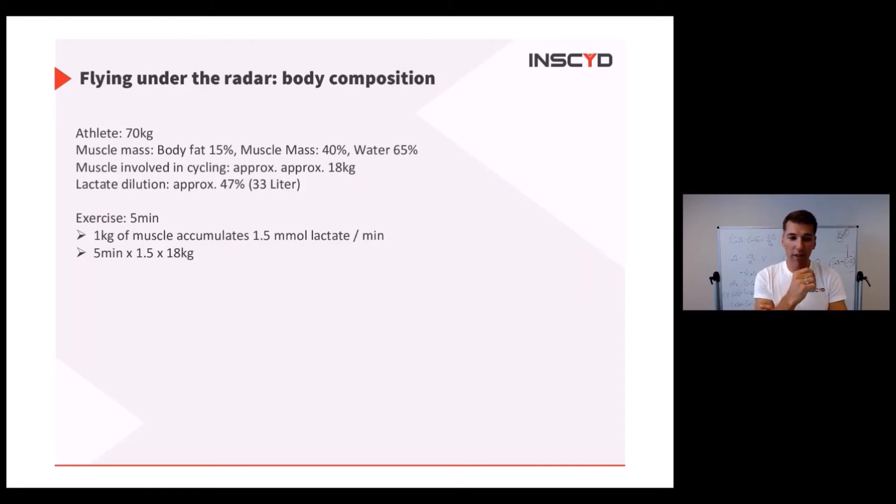If he does that for five minutes, it's five minutes multiplied by 1.5, multiplied by 18 kilograms, because we said one kilogram of muscle is accumulating 1.5. Which means he is accumulating 132 millimoles of lactate. You divide this by 33 liters, and here you get your 4.1 millimoles.